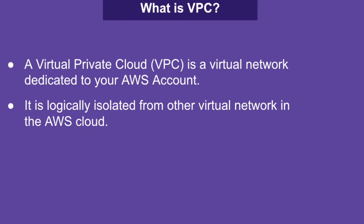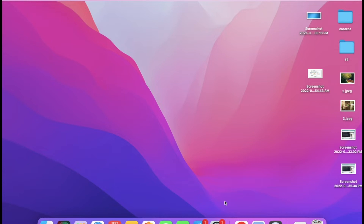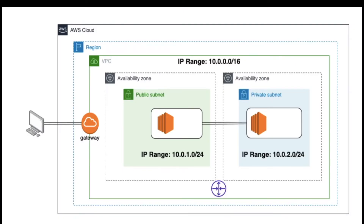First, what is VPC? It is a virtual network that can be created in a public cloud. It is dedicated to your AWS account. It enables you to launch AWS resources into your virtual network that you have defined. Before creating any infrastructure in AWS cloud, we should have some plan about the infrastructure and the architecture design. This is the sample architecture design we will follow in this video and show you how to build the same architecture design in AWS.